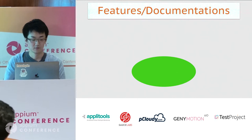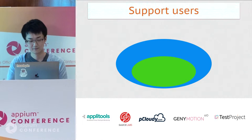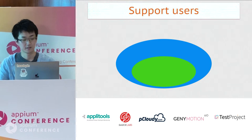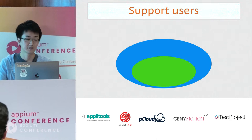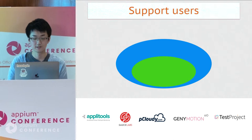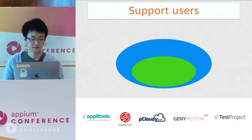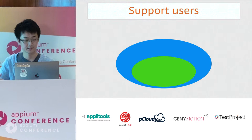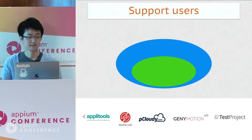But time is limited — no one can work on everything. Around the development members, we need supporters. The blue color represents supporters in the community — they guide beginners and answer questions. Hopefully, users who get answers from supporters will become the next supporter for someone else. This cycle is very important in OSS communities.